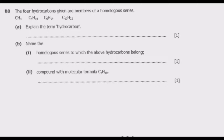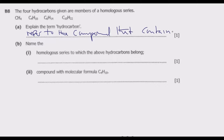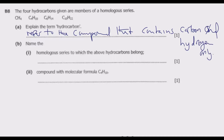When talking about hydrocarbons, we are talking about organic compounds that contain hydrogen and carbon only. So these are compounds that contain basically just hydrogen and carbon. A hydrocarbon is a compound that contains carbon and hydrogen — that is basically what a hydrocarbon is.